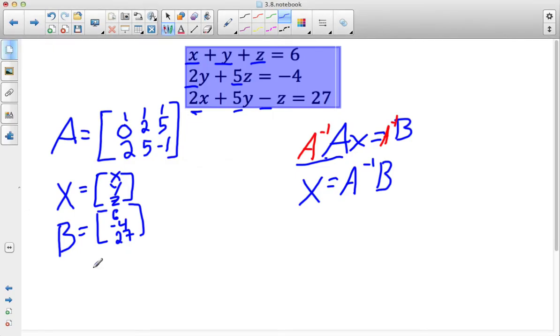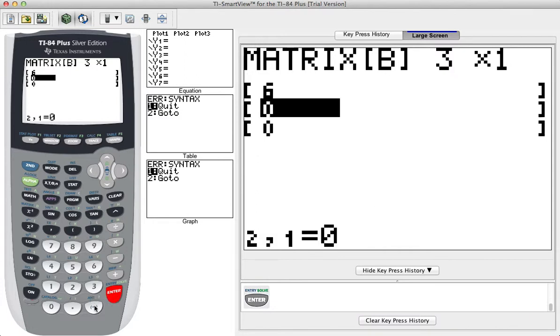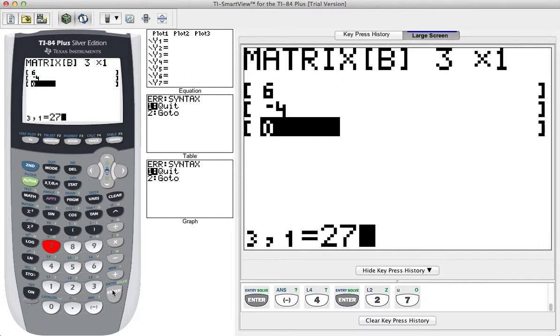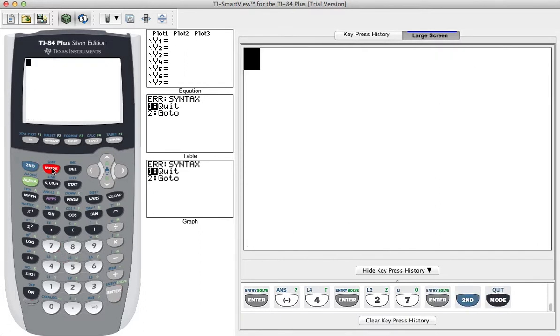What was it again? 6, negative 4, 27. Great. Quit out of there.